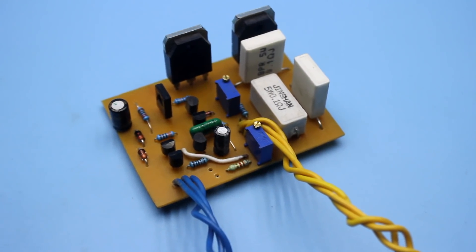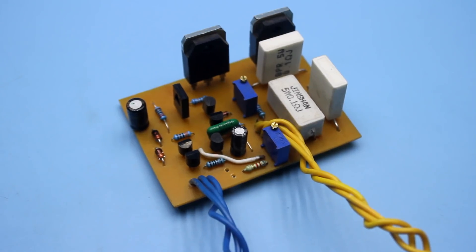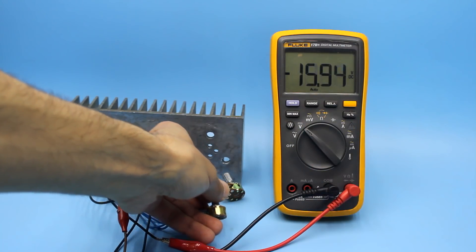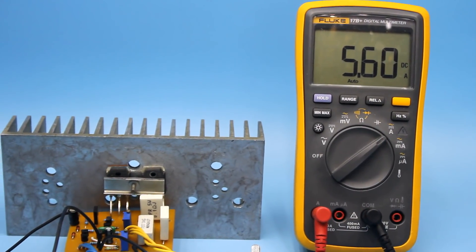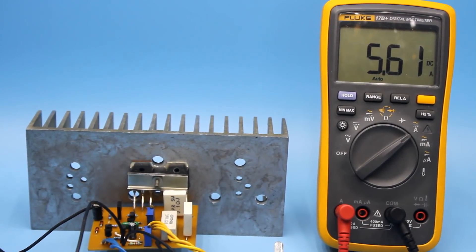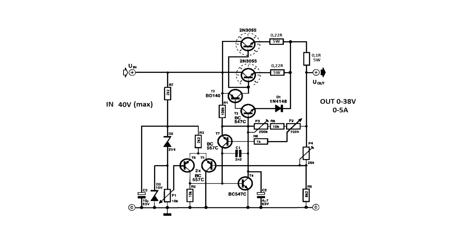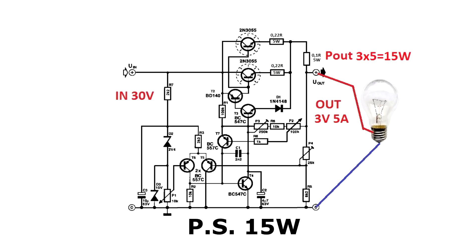I will briefly explain what the main problem is. Suppose you have assembled a power supply with a voltage adjustment from 0 to 30 volts and current from 0 to 5 amperes. In the case of a linear circuit, if you set low voltages and high currents at the output, for example 3 volts and 5 amperes, the output is about 9 watts.